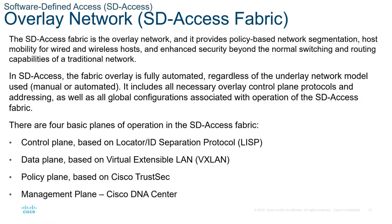The SD-Access fabric is the overlay network. It provides policy-based network segmentation, host mobility for wired and wireless hosts, and enhanced security beyond the normal switching and routing capabilities of a traditional network. In SD-Access, the fabric overlay is fully automated. Regardless of the underlay network model used — manual or automated — it includes all necessary overlay control plane protocols and addressing, as well as global configurations associated with the operation of the SD-Access fabric.